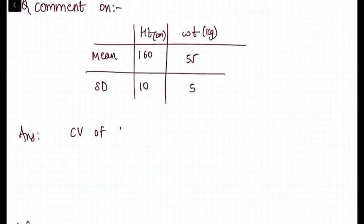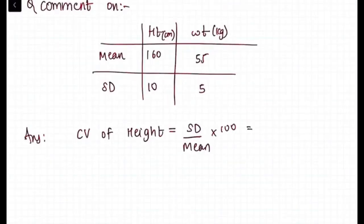We will see the example comment on height and weight of the given data. So how will we find coefficient of variation of height? It is equal to standard deviation upon mean into 100.